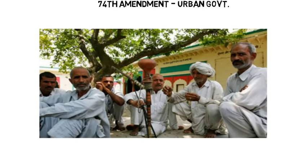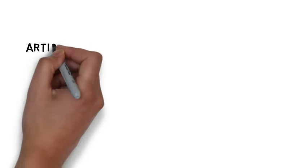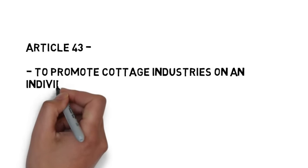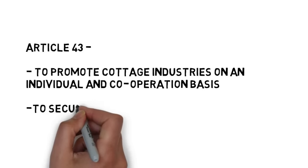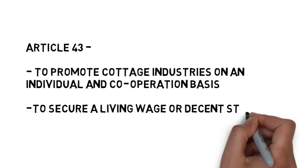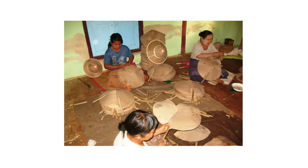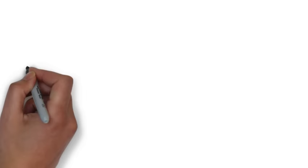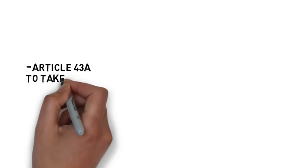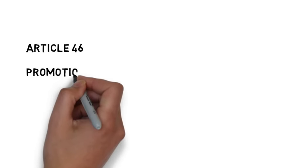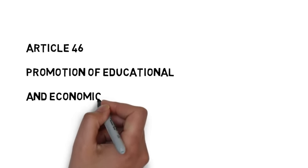After the 72nd and 73rd amendments, Panchayati Raj has constitutional status. Article 43 has two provisions: first, to promote cottage industries on an individual and cooperative basis, and second, to secure a living wage or decent standard of life for workers. It was inserted after the 42nd amendment. Article 43A provides for participation of workers in the management of industries, also inserted after the 42nd amendment.